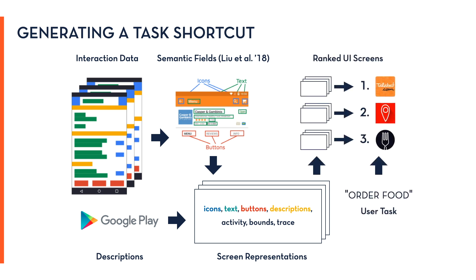Savant matches task queries to semantic information contained within representations via keyword search. A search result contains a set of representations with their corresponding relevance scores indicating how well the screens match the query. The top screen representation from the highest scoring app is called a task shortcut.